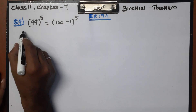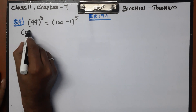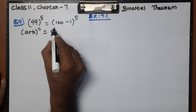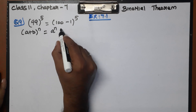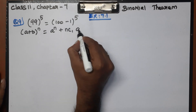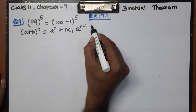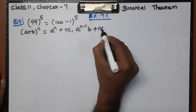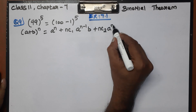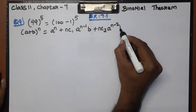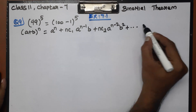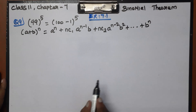Binomial theorem states: (A + B) whole power N equals A power N plus NC1 times A power N minus 1 times B, plus NC2 times A power N minus 2 times B square, and so on, up to plus B power N.